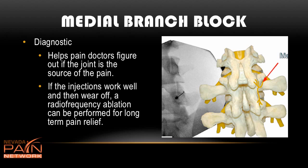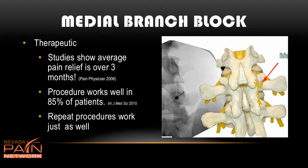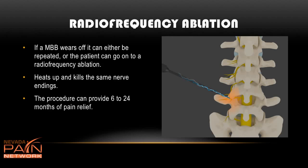If the medial branch block works well and then wears off, it can either be repeated or the patient can go on to have a radio frequency ablation — a procedure that burns the medial branch nerve endings and can provide six to 24 months of pain relief. The procedure works well in over 85% of patients, and studies show that if it wears off and you have a repeat procedure, it works just as well. Radio frequency ablation provides thermal heat and energy to deaden the medial branches, providing up to two years of pain relief.